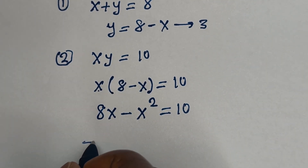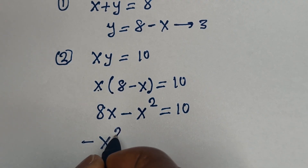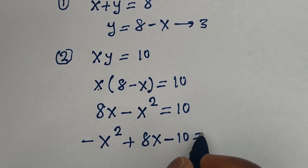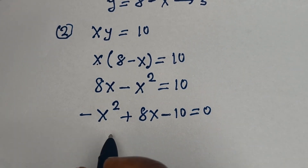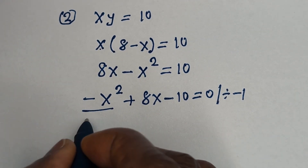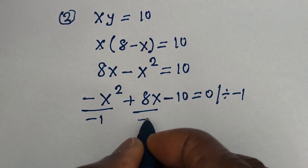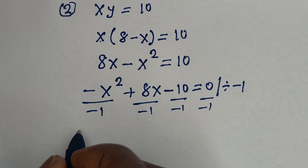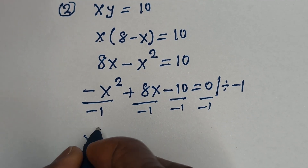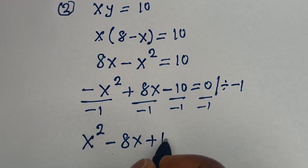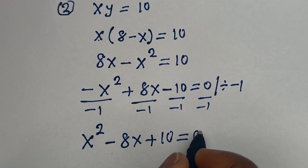Now we have minus x squared plus 8x. Let's bring everything to one side: minus x squared plus 8x minus 10 is equal to 0. Now let's divide the whole equation by minus 1: each term divided by minus 1.